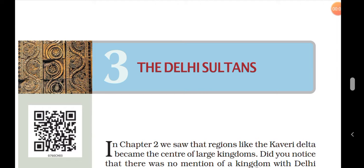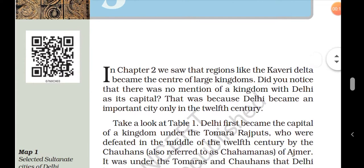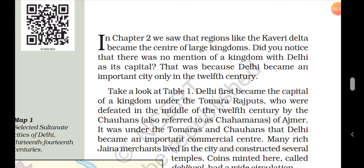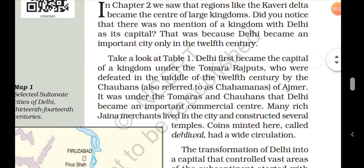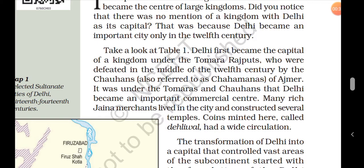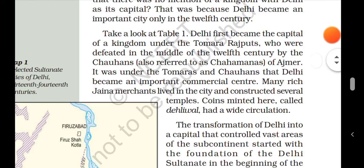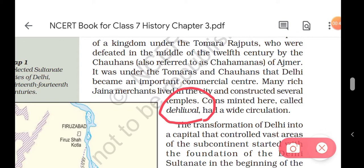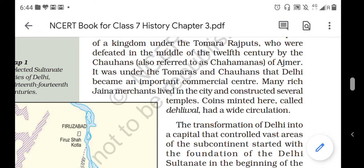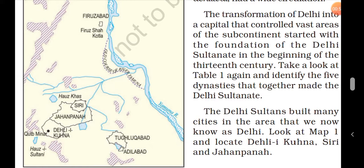Welcome. Today we will start the second part of our history on the Delhi Sultanate. Many sultans ruled over Delhi, but Delhi gained more importance and became a commercial center when the Tomars and the Chauhans started their rules. Some coins that started minting here were called the 'Dehliwal,' and these coins had very wide circulation and were very important at that time.